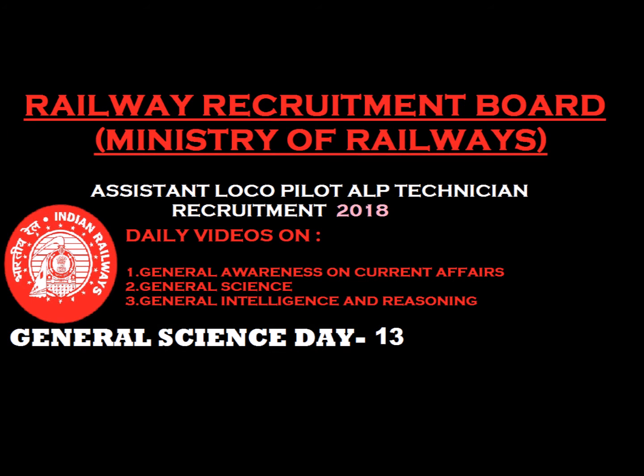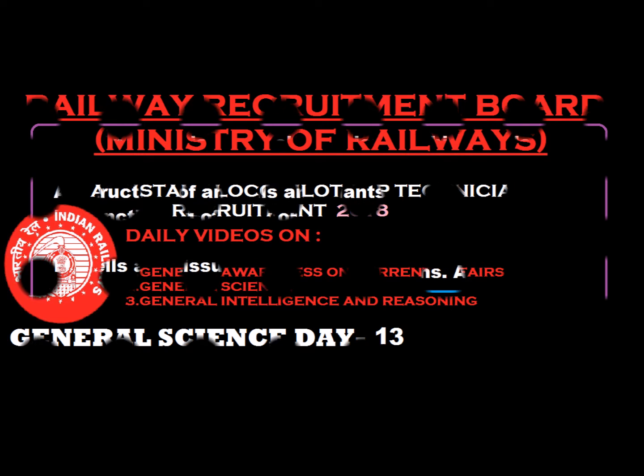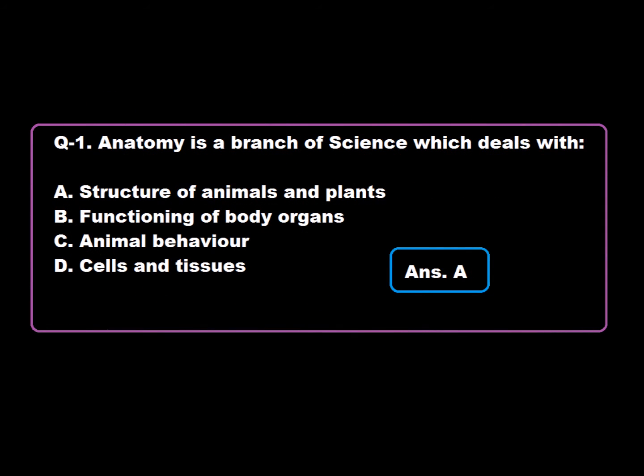General Science Day Thirteen. Question 1: Anatomy is a branch of science which deals with — Option A: Structure of animals and plants, Option B: Functioning of body organs, Option C: Animal behavior, Option D: Cells and tissue. Anatomy is a branch of science which deals with structure of animals and plants. Hence, Option A is correct.